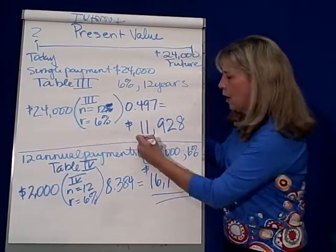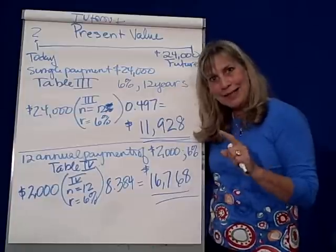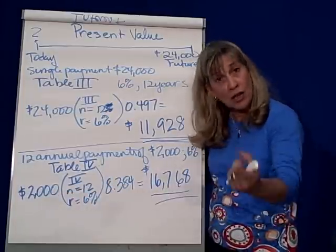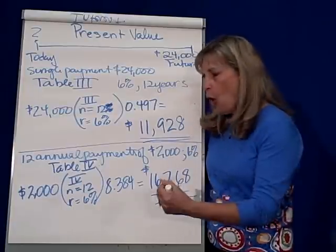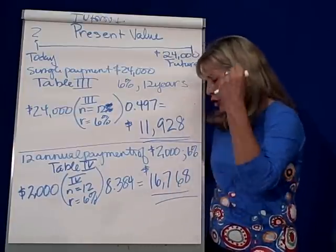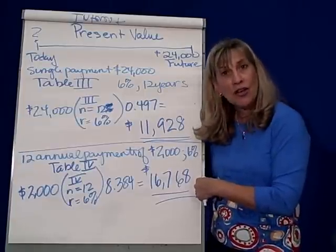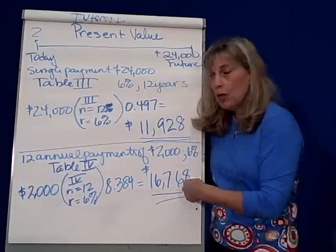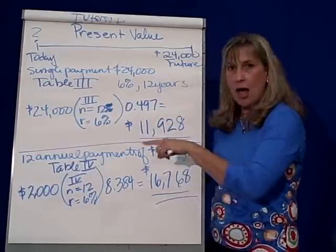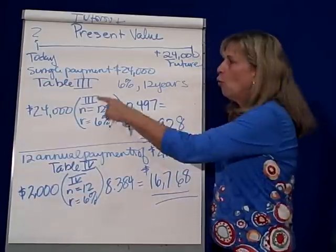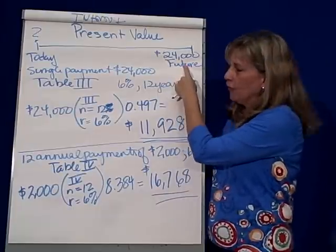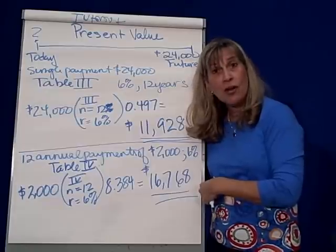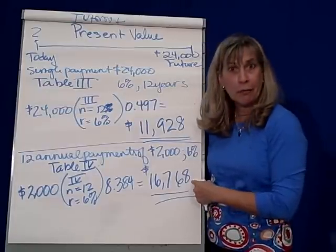So here we go. If grandma comes to you and says, 'Do you want 12 checks of $2,000 — a total of $24,000 over the next 12 years — or do you want $16,768 today?' you'd say whatever, because it's worth the same purchasing power. Now, looking at all of this, how do you think you should take the money from grandma? Wait 12 years and get $24,000, or take checks of $2,000 over the next 12 years? I'd go for the annuity, wouldn't you?